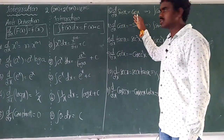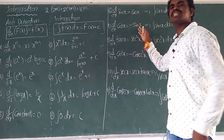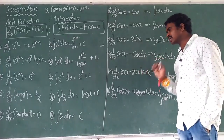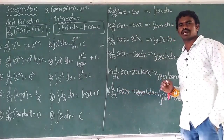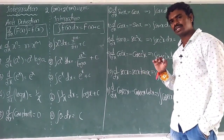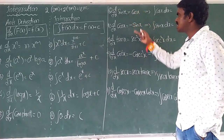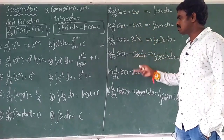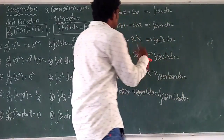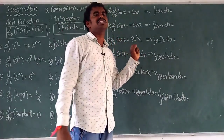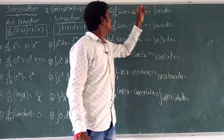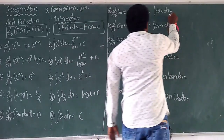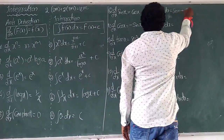What is the derivation of sin(x)? cos(x). Derivation of cos(x)? Minus sin(x). Derivation of tan(x) is sec²(x). Derivation of cot(x) is minus cosec²(x). Derivation of sec(x) is sec(x)·tan(x). Derivation of cosec(x) is minus cosec(x)·cot(x). The pattern is plus, minus, plus, minus, plus, minus. So integration of cos(x) is sin(x) plus c.